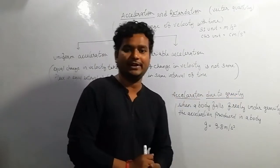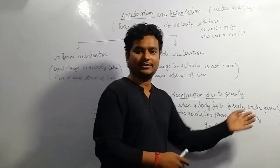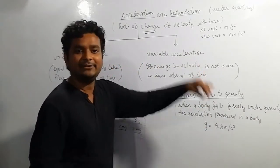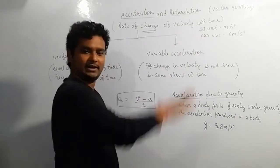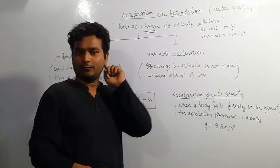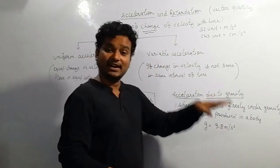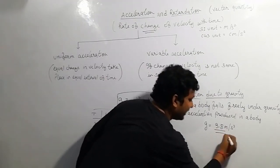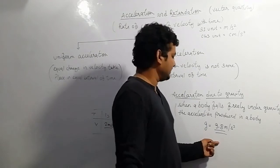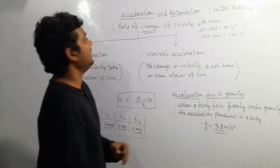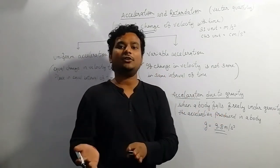Acceleration due to gravity: when a body falls freely under gravity, the acceleration produced in that body is called acceleration due to gravity. For example, if I hold an object and release it, the object falls down — not because I applied a force, but due to the Earth's gravitational attraction. The object moves downward with an acceleration of 9.8 meter per second squared. In some cases, we approximate it as 10 meter per second squared. This is acceleration due to gravity.